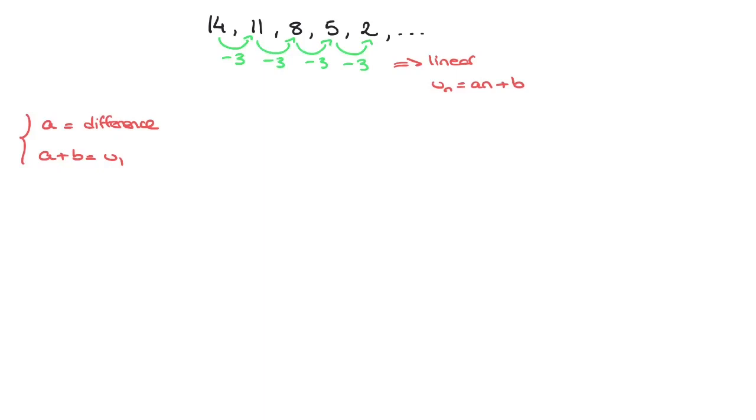So for our sequence here, the difference would be negative 3. So we can write a equals to negative 3. And the first term we can see right away is 14. So the second equation becomes a plus b equals to 14.